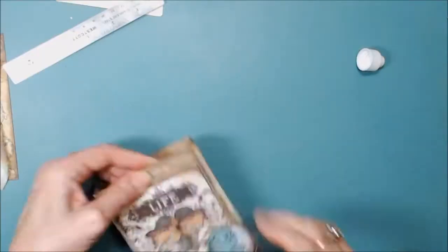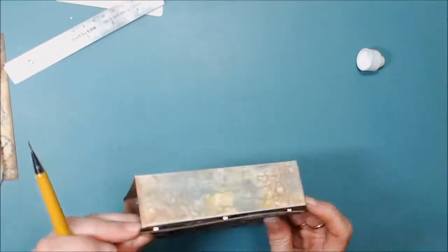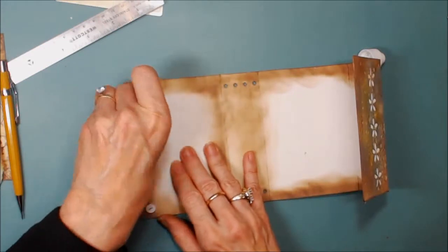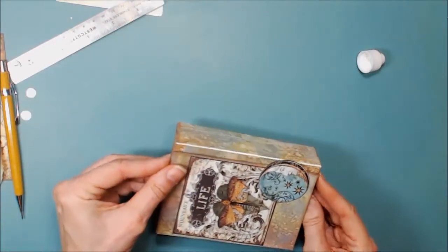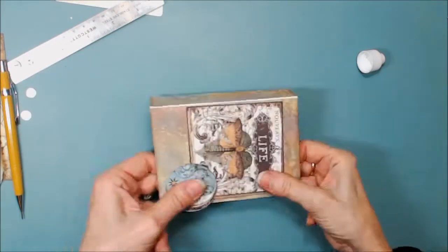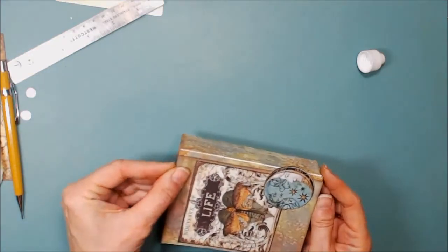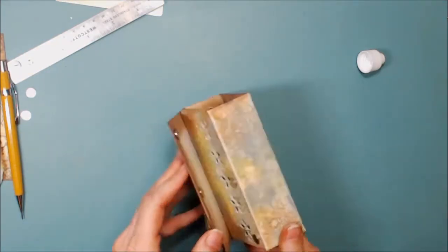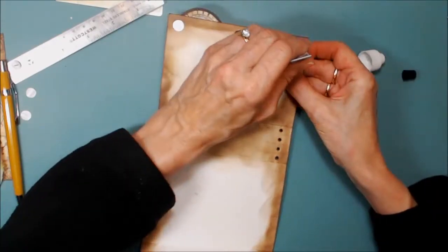So just fold your book closed, mark where the closure should be, and then remove the little adhesive backing on the magnets, and your mini will close up perfectly. Now I use some E6000 because the magnets don't always adhere well to a glue and inked surface.